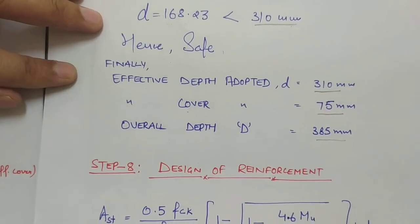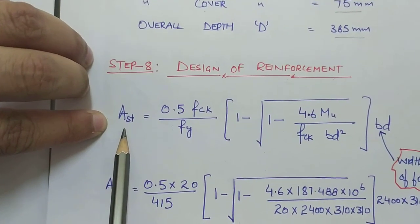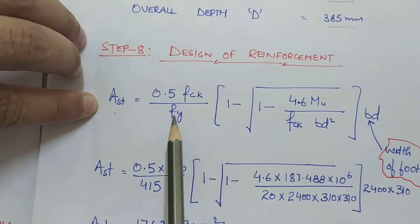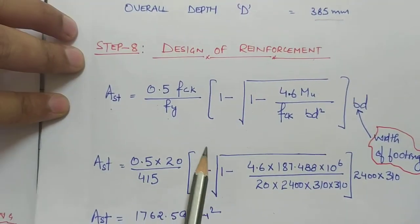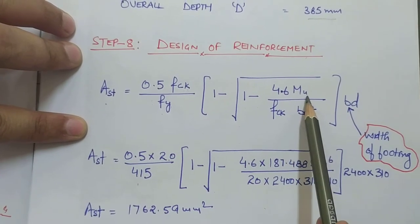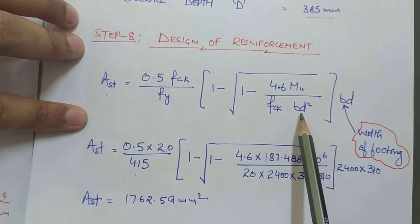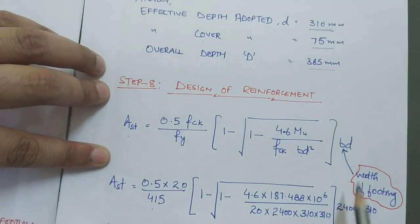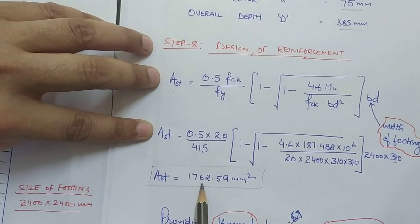Now comes the design of reinforcement. The cross-sectional area of steel required is calculated using the formula: As = (0.5 × FCK / FY) × [1 − √(1 − 4.6MU / (FCK × B × D²))] × B × D. Substituting FCK = 20, FY = 415, MU = 187.488 × 10⁶ N·mm, B = 2400 mm, D = 310 mm, we get As = 1762.59 mm².